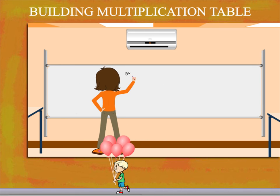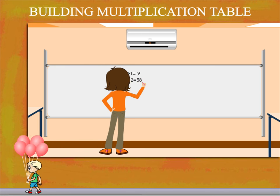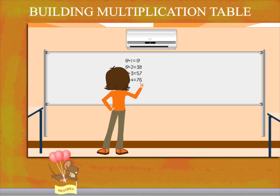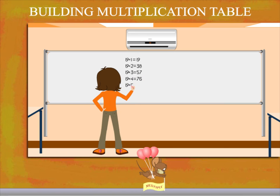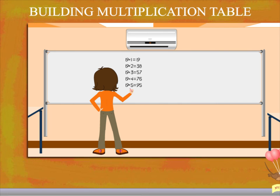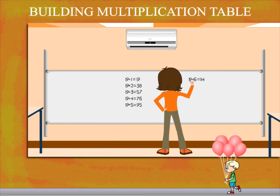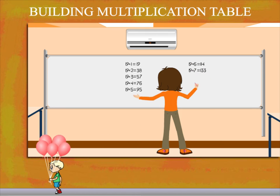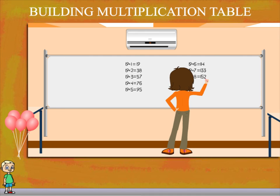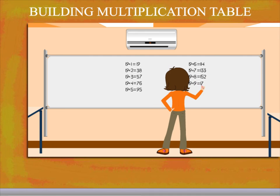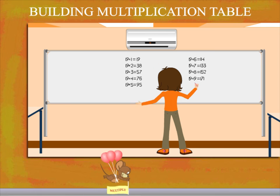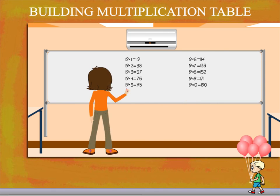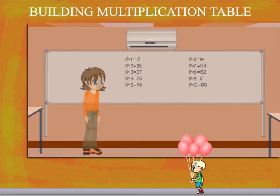Show us the tables of 19. 19 1s are 19, 19 2s are 38, 19 3s are 57, 19 4s are 76, 19 5s are 95, 19 6s are 114, 19 7s are 133, 19 8s are 152, 19 9s are 171, 19 10s are 190. Well done!